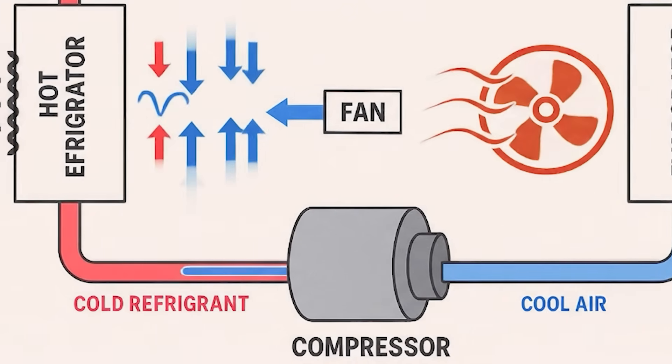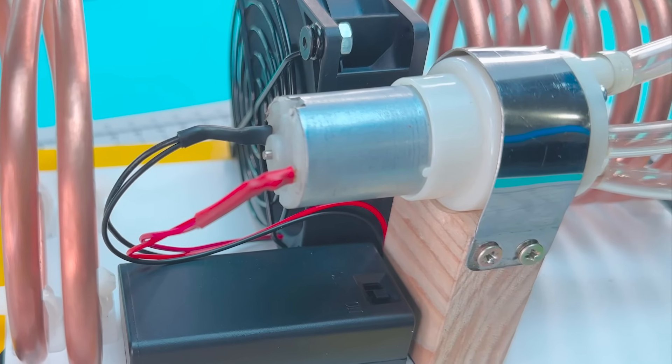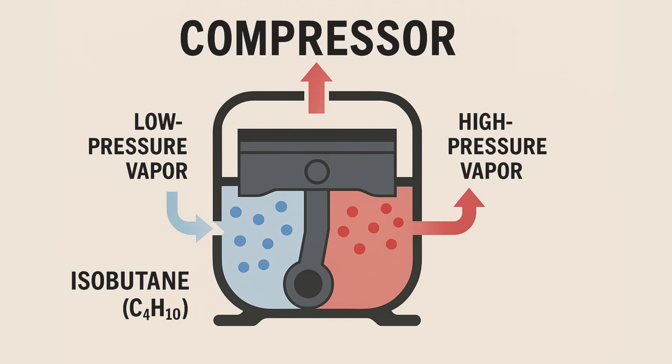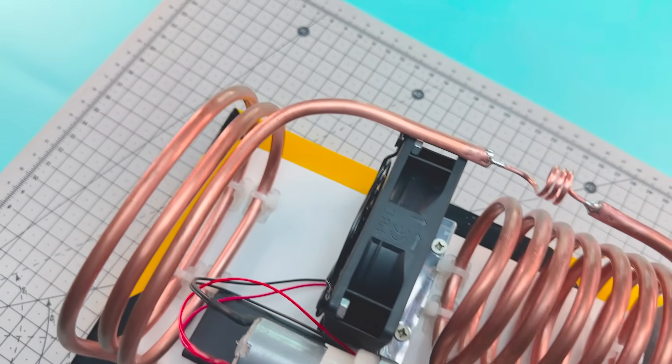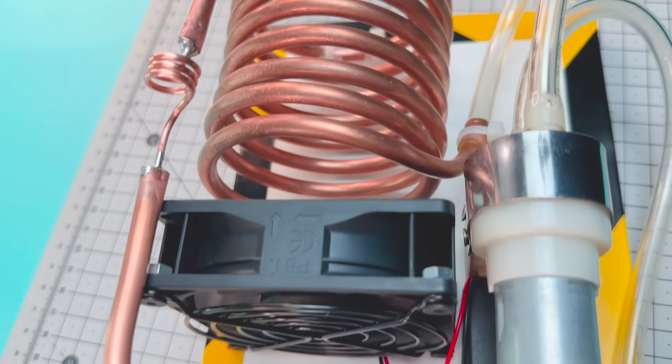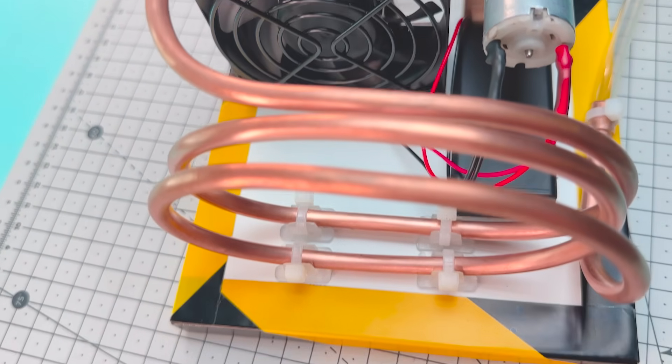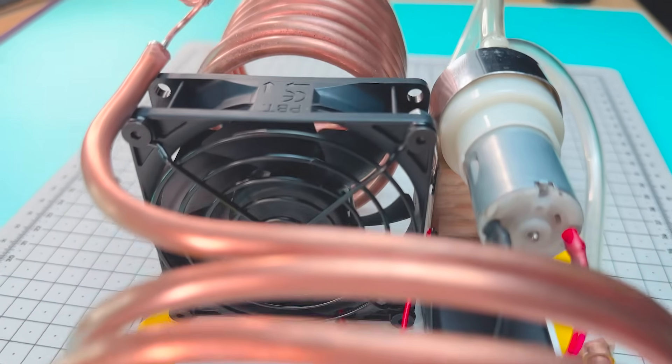That's where the pump comes in, simulating the role of a compressor. It collects the low pressure gas and compresses it, increasing its temperature. Then as it passes through another section of the circuit, the gas releases that heat into the environment and condenses. It becomes liquid again, and the circuit is complete.